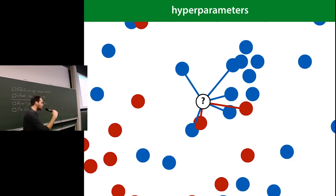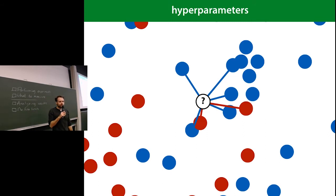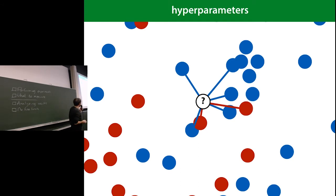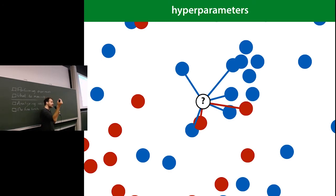First thing you do in any machine learning project is split off your test and training data and use only your training data. But then you usually want to do something called hyperparameter selection. The hyperparameters of a model are those parameters chosen by you — based on intuition or dumb luck — that are not trained on the data. For instance, in the k-nearest neighbor classifier, which looks at the nearest k points and picks the most prevalent class, that number k is a hyperparameter. You have to choose it.